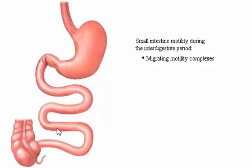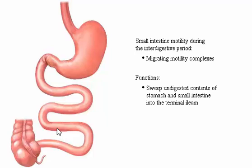In summary, the type of motility in the small intestine during the interdigestive period is the migrating motility complex. It sweeps undigested contents of the stomach and small intestine into the terminal ileum.